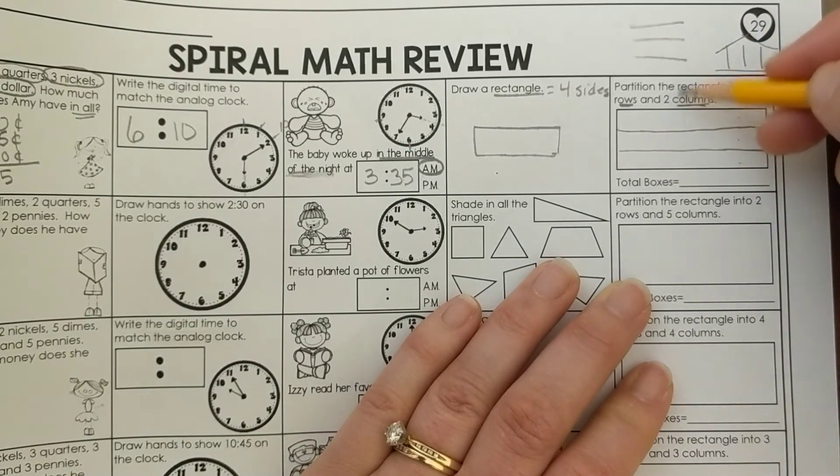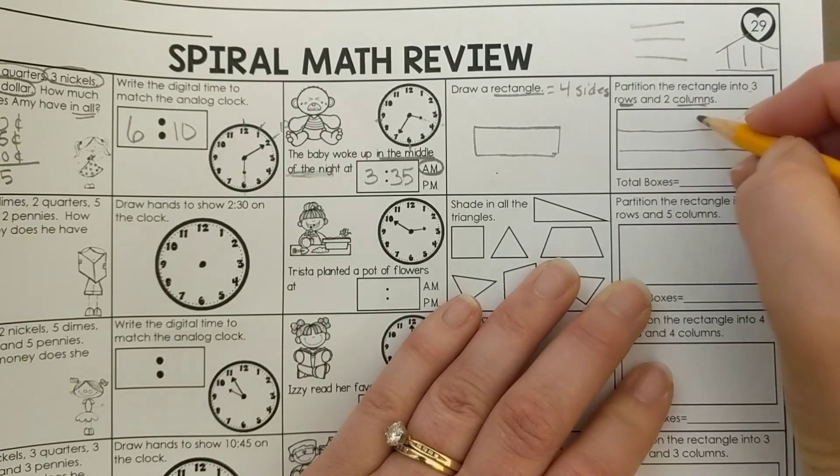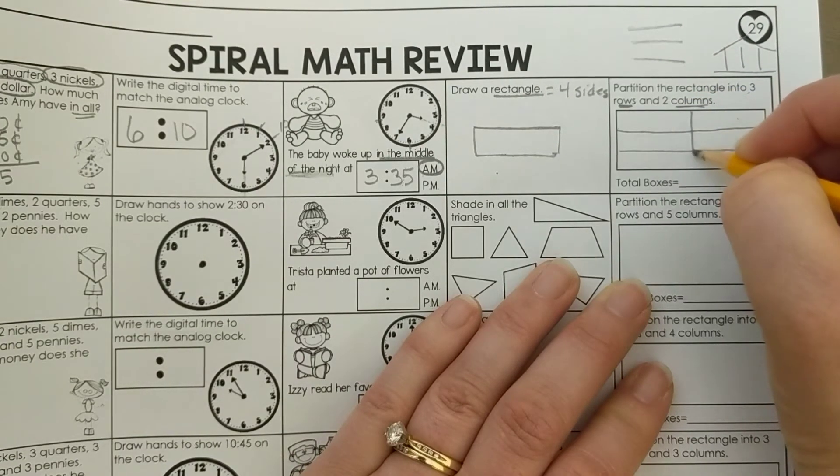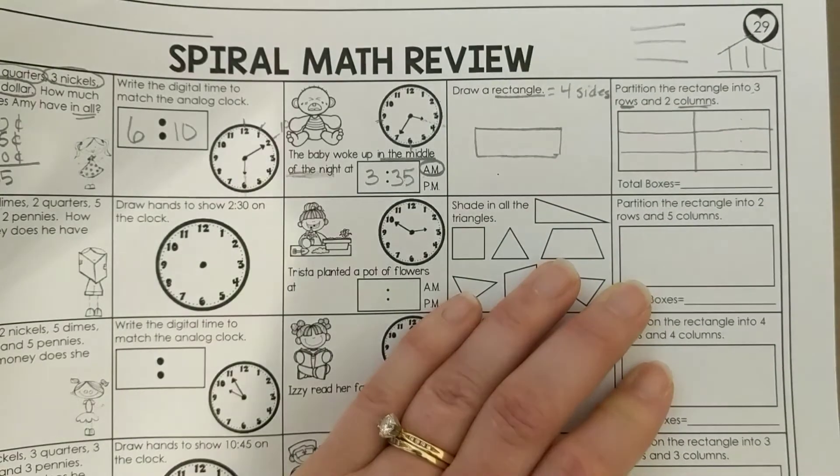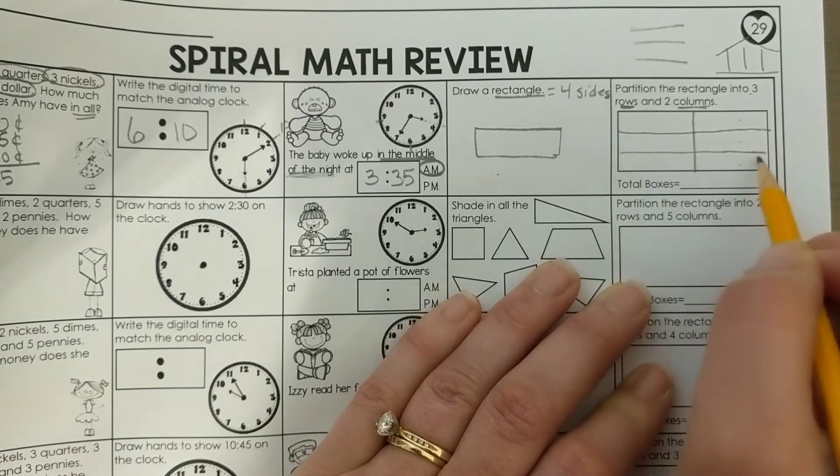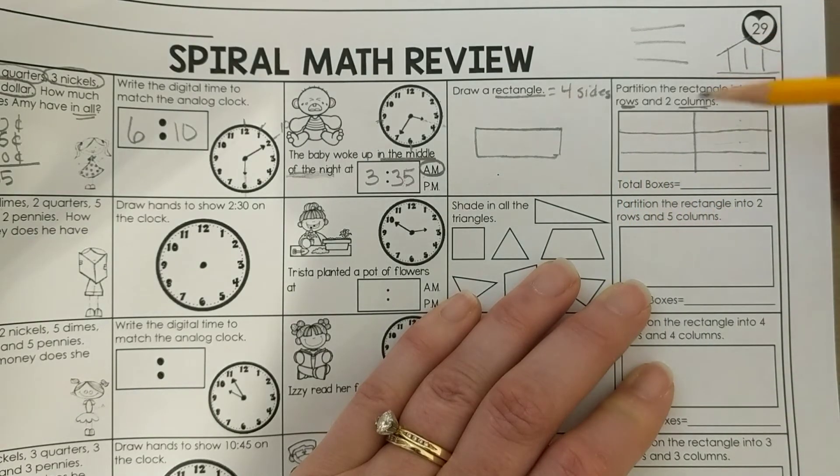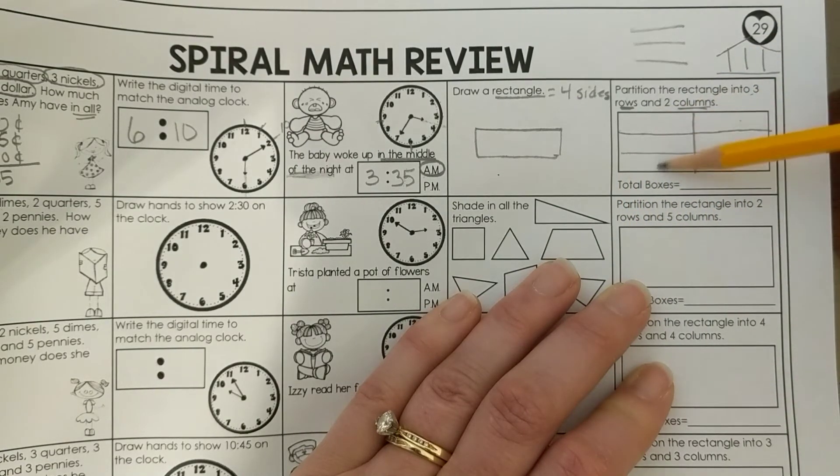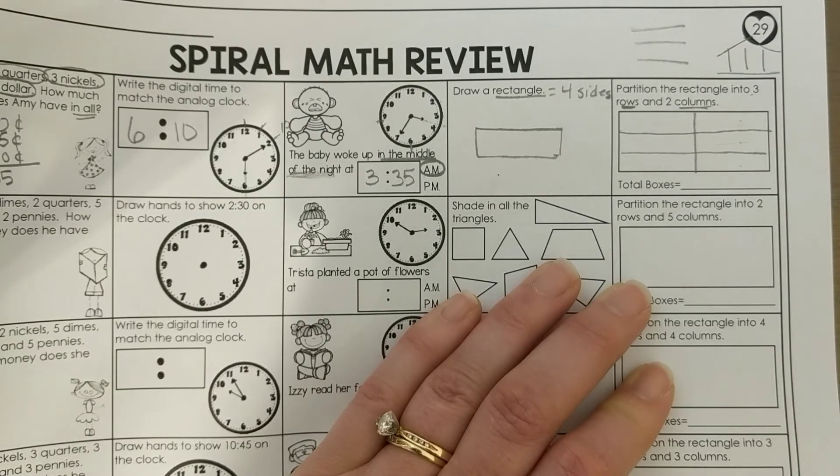Same thing, I need to draw one less line. So if I have two columns, I only need to draw one line going up and down. Now I have three rows going side to side: 1, 2, 3. And I have two columns going up and down: 1, 2.